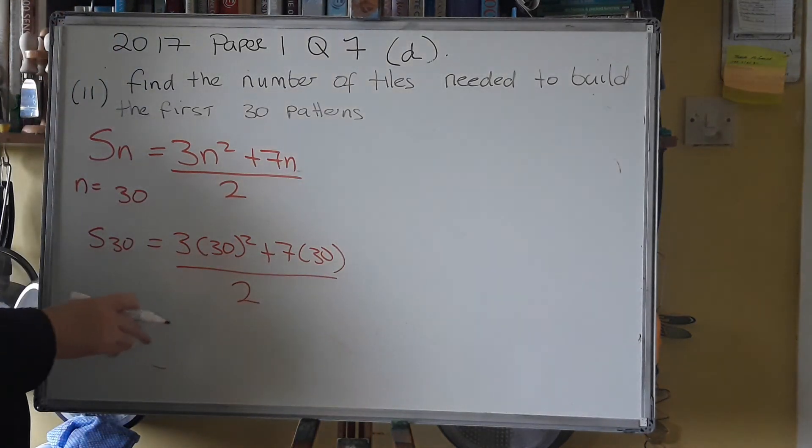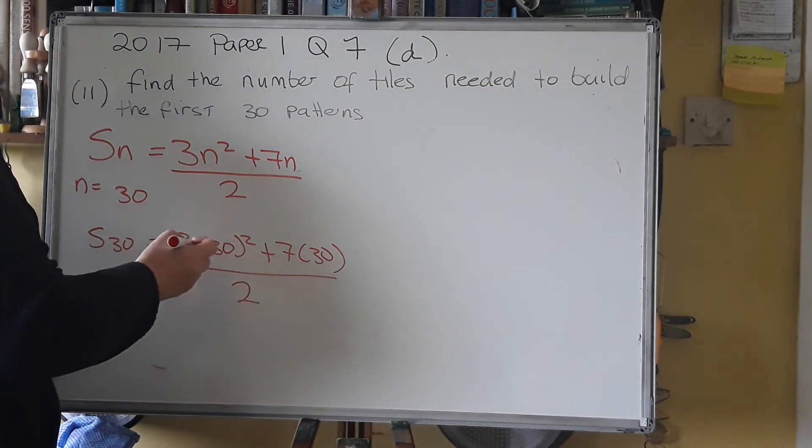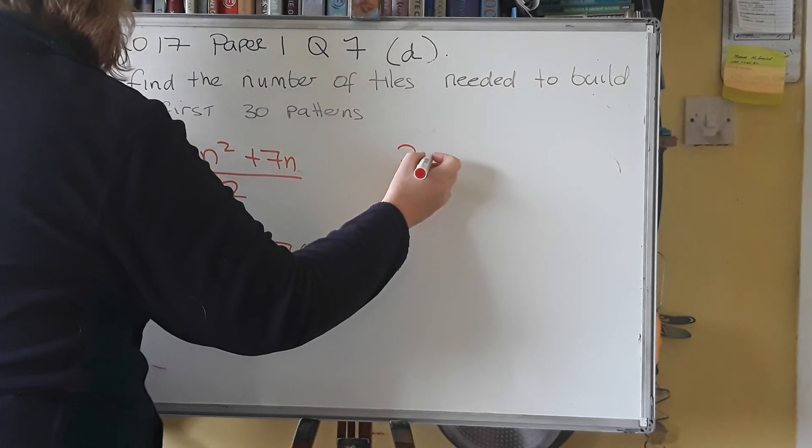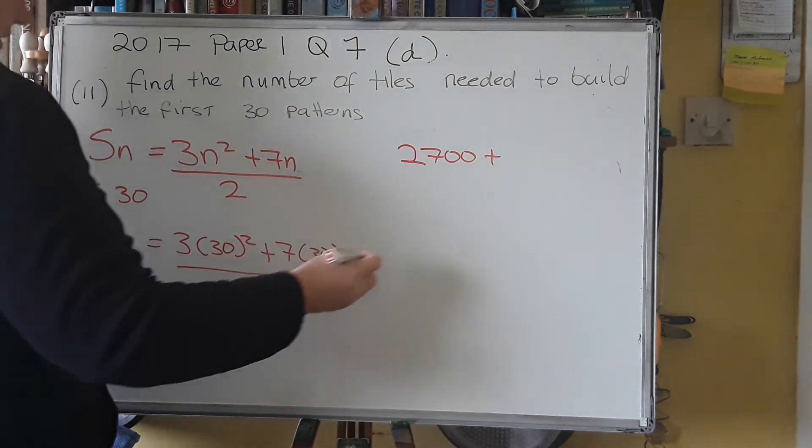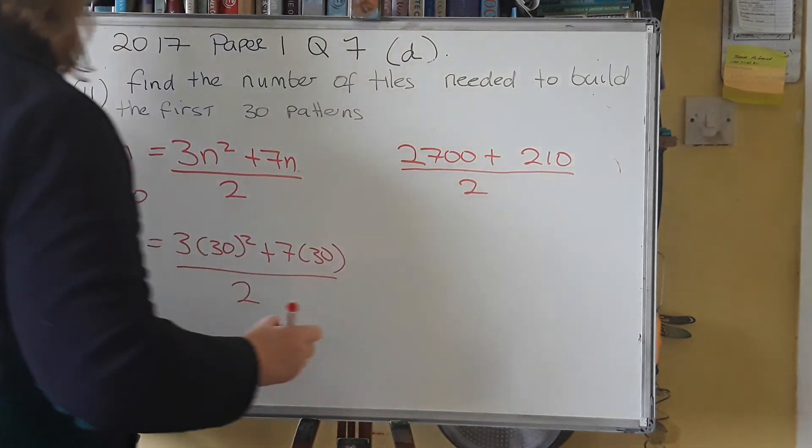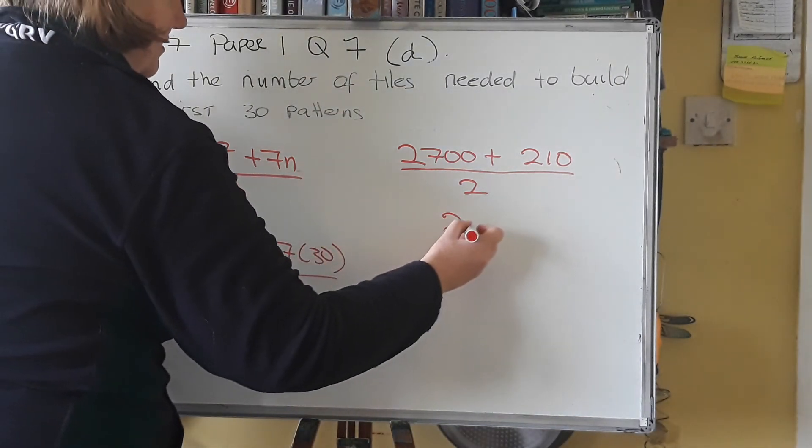Now, at this point, you should be able to put the whole of that into your calculator and get the answer. Just type it in as you see there. Bring up your fraction. Type the whole lot in. 30 squared multiplied by 3. That gives you 2,700 plus 7 by 30 gives you 210. And that's all over 2. So, you have 2,700 plus 210 gives you 2,910. And that's still over 2.